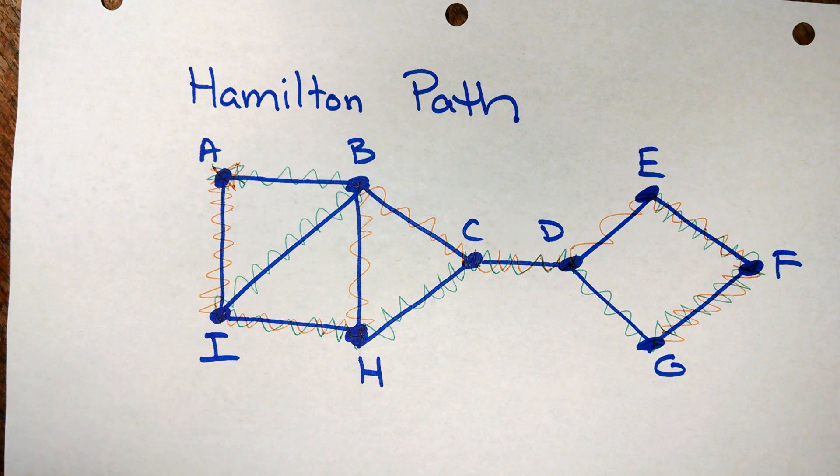But the most important point here is that all we care about is whether or not it is traveling through each vertex once and only once. That is what makes a Hamilton path.